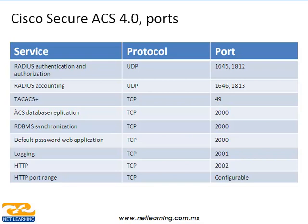Cuando nosotros hacemos un login al ACS, si la dirección del ACS es la 192.168.1.1, le pondríamos HTTP://192.168.1.1:2002, porque no utiliza el puerto 80 sino el puerto 2002, aunque se puede configurar a que sea el puerto 80.